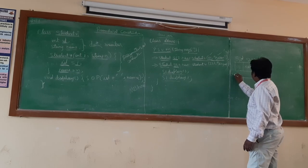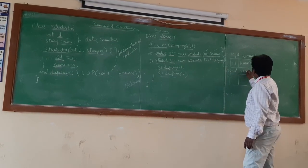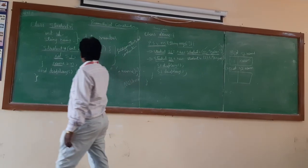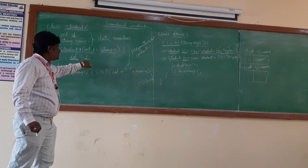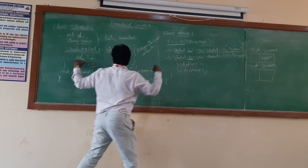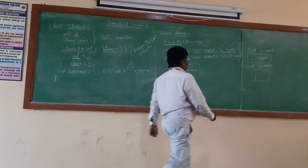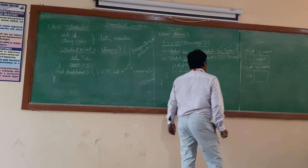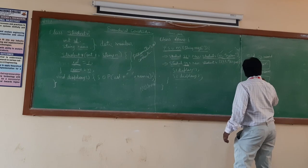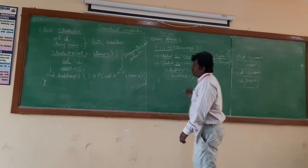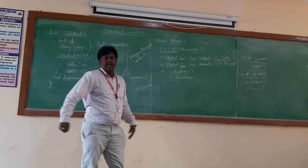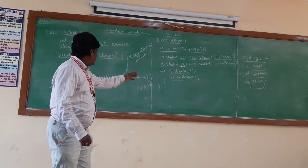Similarly, when I create another object — Student S2 = new Student4(222, "Arjun") — another object S2 is created with S2.id and S2.name. The value 222 is saved into S2.id because S2 is the calling object. And the name Arjun is saved into S2.name.